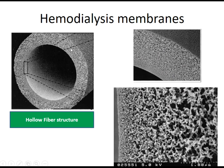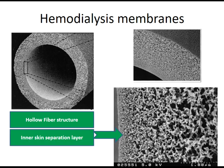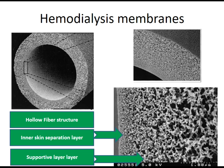Each fiber has a hollow structure forming the blood pathway and a wall. The internal diameter and wall thickness define the fiber structure. Within the wall, there is a separation layer — specifically an inner skin separation layer — which is the most important layer in sieving, determining which solutes or molecules can pass. There is also a supportive layer within the wall.